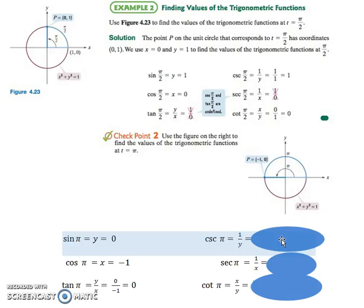Cosecant would be the reciprocal of the sine, so 1 over 0 would be undefined. Secant is the reciprocal of cosine, so 1 over negative 1 is negative 1.